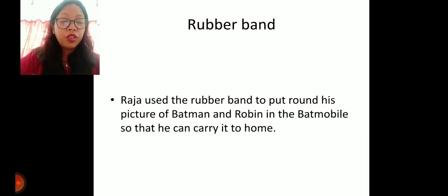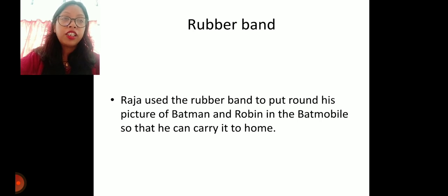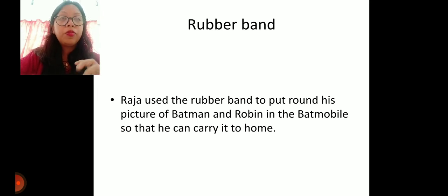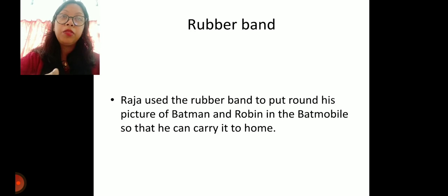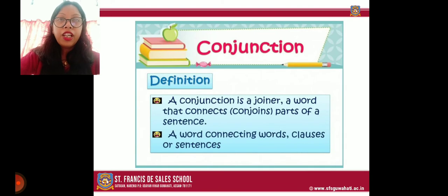The last item was the rubber band. Raja had painted a picture of Batman and Robin in the Batmobile. Miss Maya rolled it up and gave it to Raja to carry home. He used the rubber band to roll the painting so he could carry it comfortably. These are all the things Raja collected and how each one became useful after he entered the school.